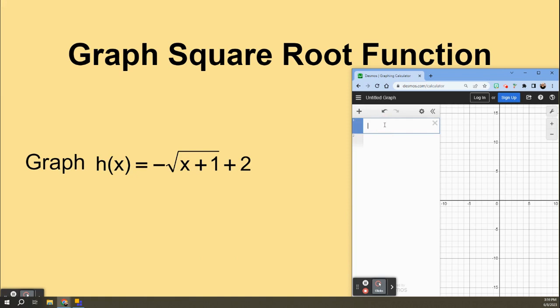I'm going to type in this equation: h of x equals negative, and now I need the square root. So the way we do that in Desmos is just type SQRT, and Desmos puts in a square root.